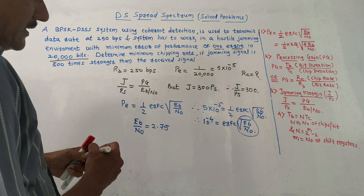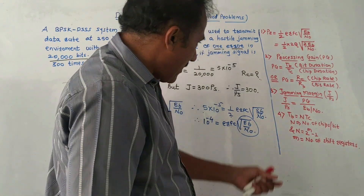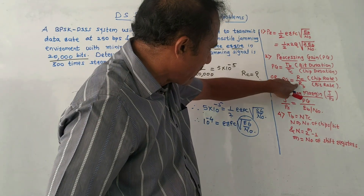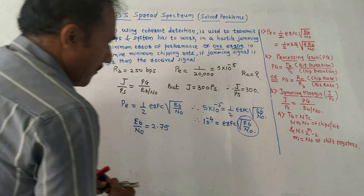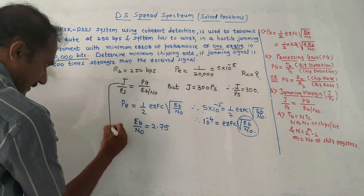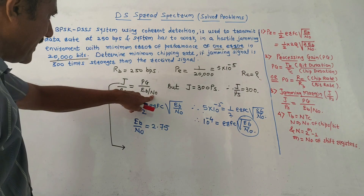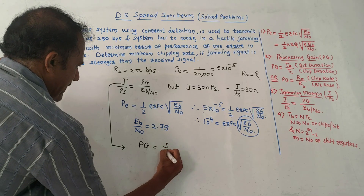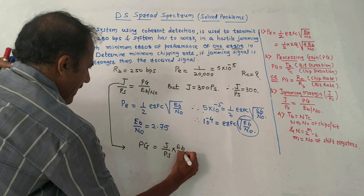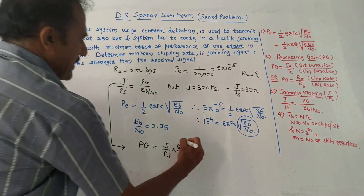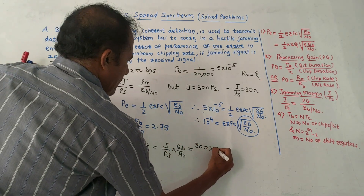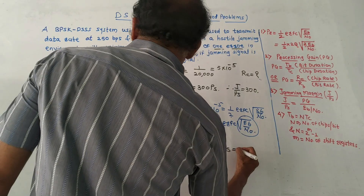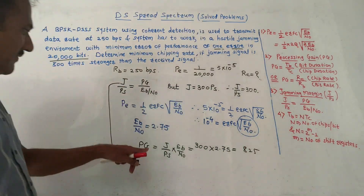Now let us calculate the value of PG. We have the formula J by PS equals PG upon EB by N0. From this, PG equals J by PS into EB by N0. Putting the values: PG equals 300 into 2.75, which gives 825. This is the value of PG.